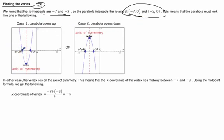So that means that our parabola has to look like one of these. It's going to cross at these points, negative 7, zero, and negative 3, zero, and it can either open upward, or it could open downward. We don't know.